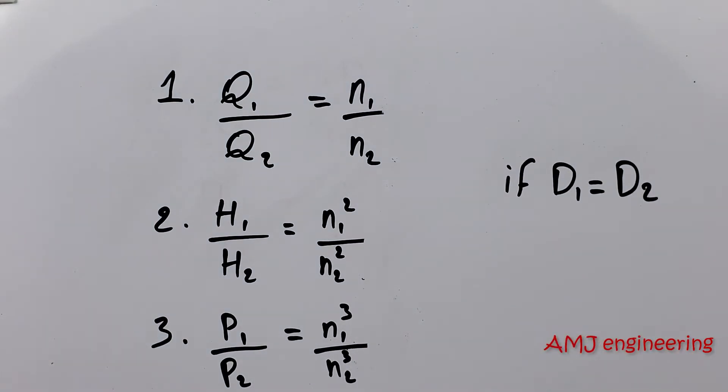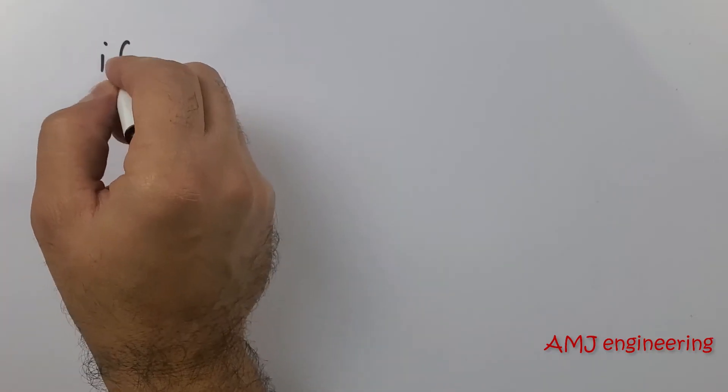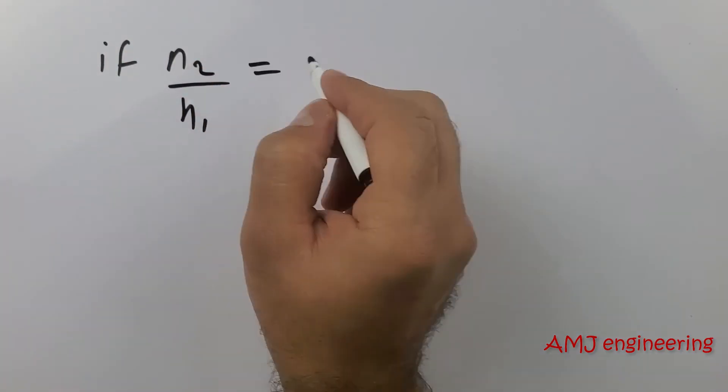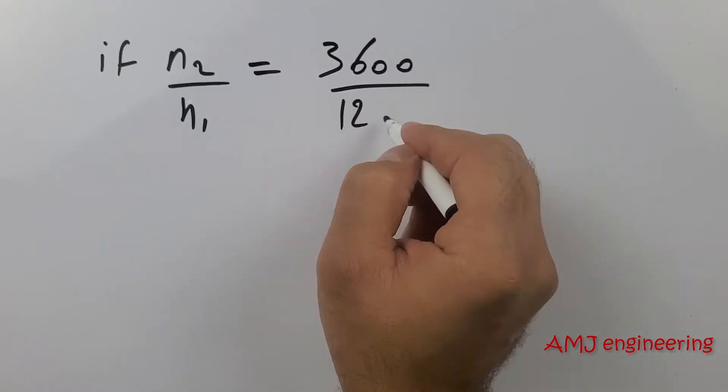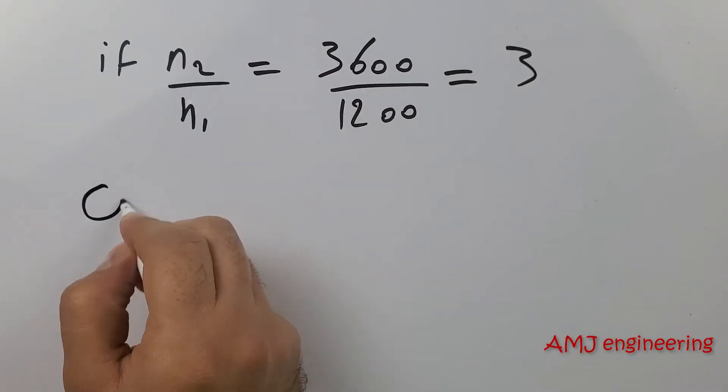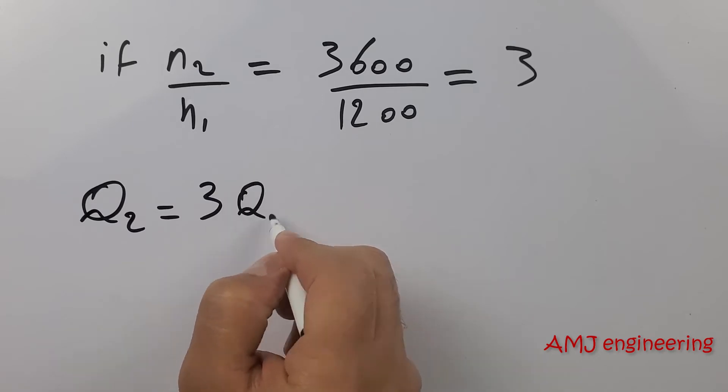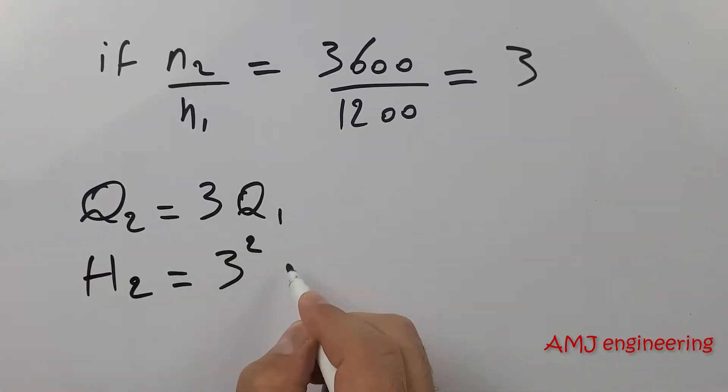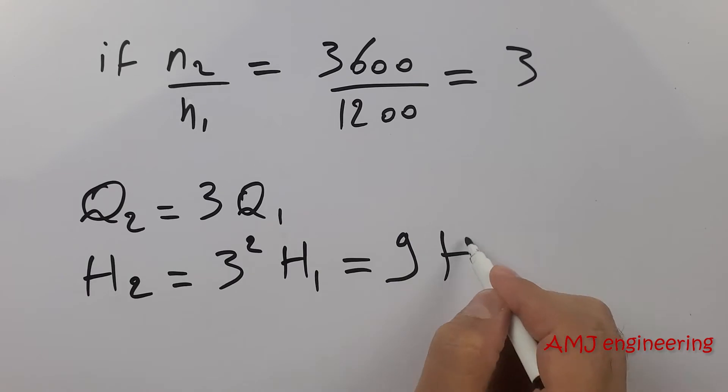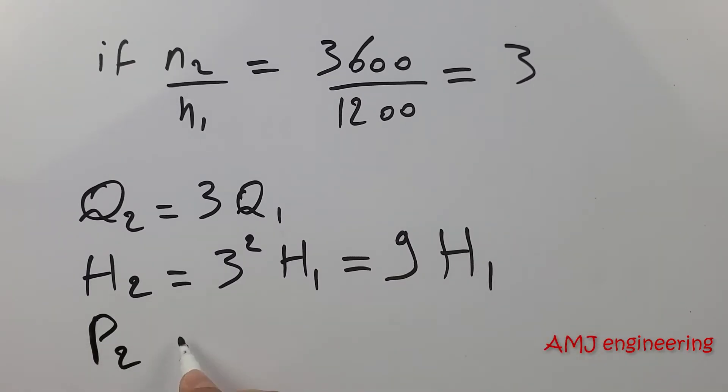So in our case, increasing the speed three times from 1200 to 3600 means the flow on the X axis should be multiplied by 3. The head on the Y axis is increased by 3 squared, so should be multiplied by 9. And the power curves should be multiplied by 3 cubed or 27.